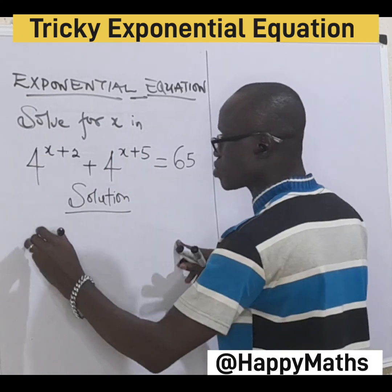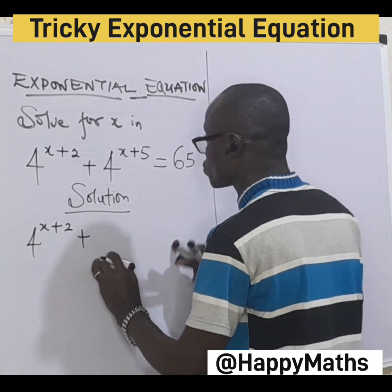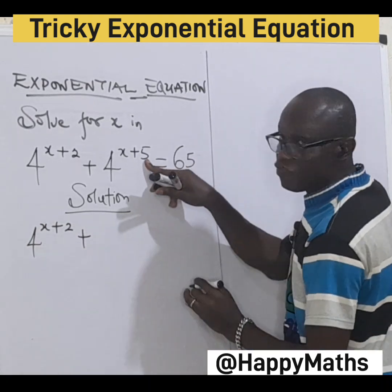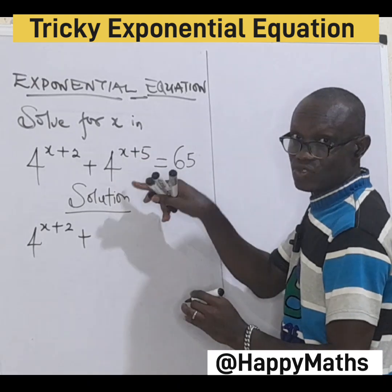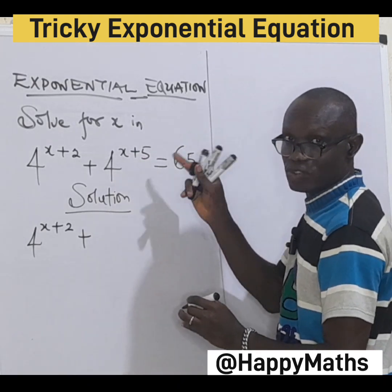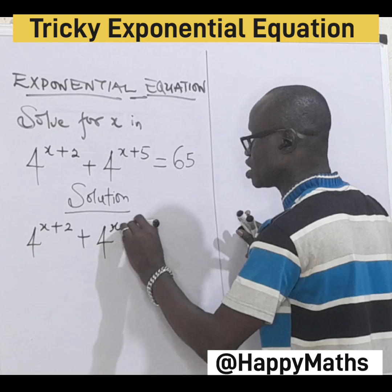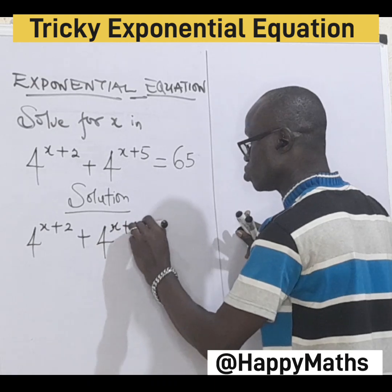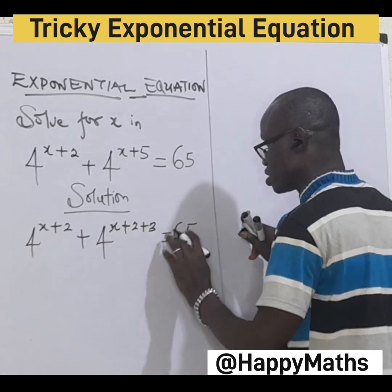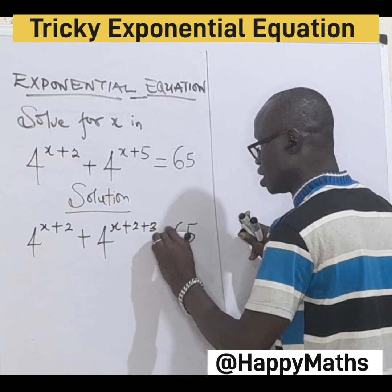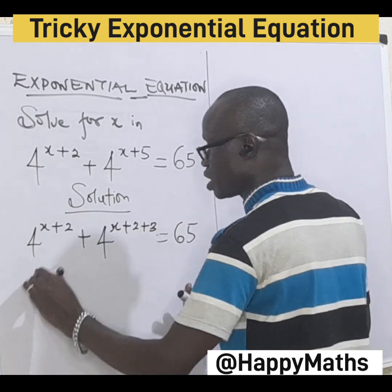Now let's go: 4s plus 2 plus 5 will give us 2s by 3. We have to split 5, so 2 and 3 — because 2 plus 3 gives us 5 back. So this is 4s plus 2 plus 3, equal to 65.